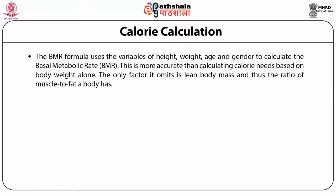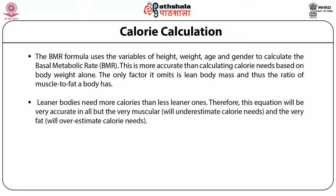The BMR formula uses height, weight, age and gender to calculate basal metabolic rate, which is more accurate than calculating calorie needs based on body weight alone. The only factor it omits is lean body mass and thus the ratio of muscle to fat. Leaner bodies need more calories than less lean ones. Therefore, this equation will underestimate calorie needs for the very muscular and overestimate calorie needs for the very fat.